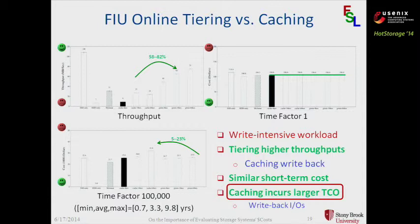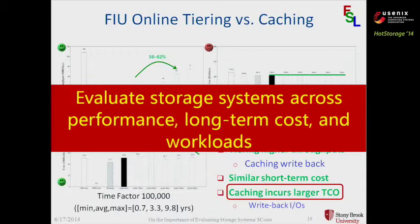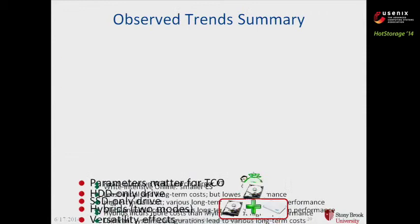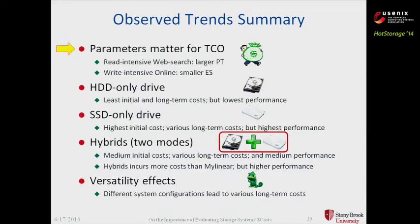Summarizing the results we have discussed, that explains why we believe we should really evaluate storage systems across performance, long-term cost, and workloads. To summarize the observed trends: first, parameters really matter for total cost of ownership. For the read-intensive WebSearch workload, a larger promotion threshold leads to smaller total cost of ownership. For the write-intensive online workload, smaller extent size leads to smaller total cost of ownership. For the HDD-only drive, it has the least initial and long-term cost, but it has the lowest performance — that may explain why storage system practitioners are looking into other opportunities.